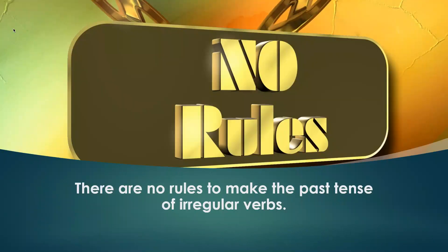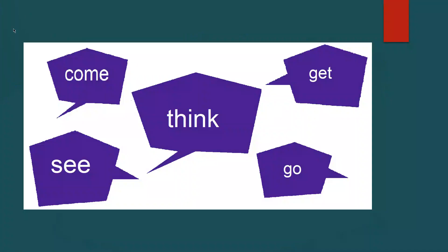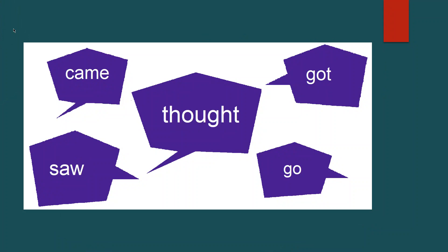But there are no rules to make the past tense of irregular verbs. For example, the past tense of come is came, the past tense of get is got, the past tense of think is thought, the past tense of see is saw, and the past tense of go is went.